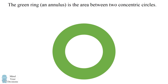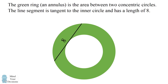Hey, this is Presh Talwalkar. The green ring or annulus is the area between two concentric circles. The line segment is tangent to the inner circle and has a length of 8. What is the area of the ring? In this video, I'm going to present five different ways to solve this problem. Even if you can get the correct answer, you might want to keep watching to the end where I give a brief introduction to visual calculus. Give this problem a try, and when you're ready, keep watching for the solution.